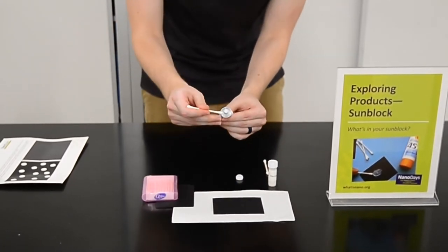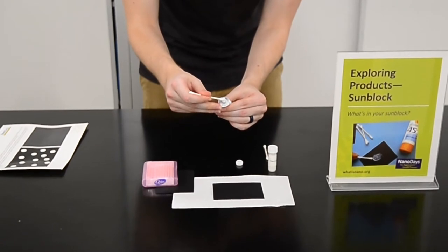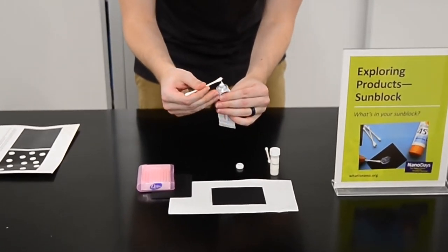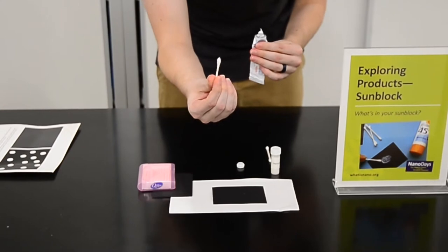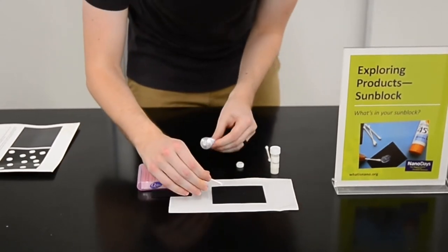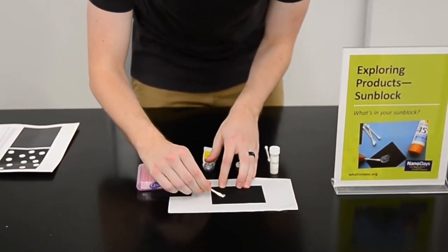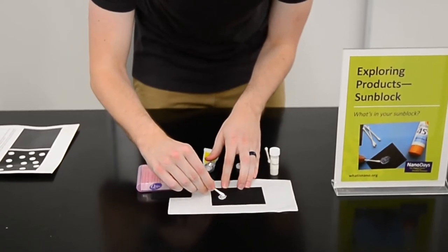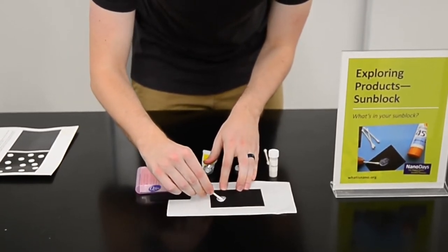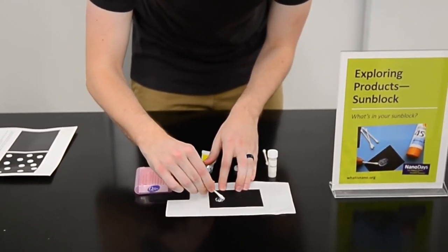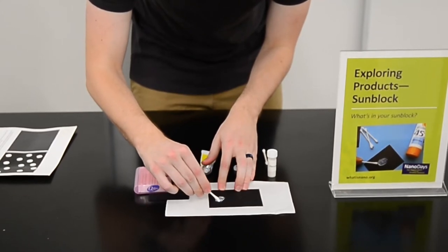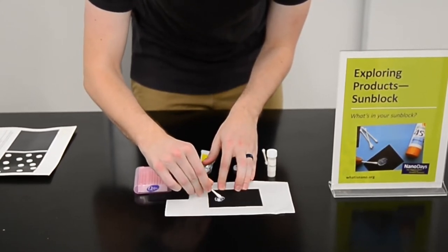So you'll see here, I've got a little dab on the q-tip, not too much. See, it's really white. And you'll notice here as I wipe it onto the construction paper, that I'm rubbing it in, I'm rubbing it in, I'm rubbing it in, and some of it's kind of absorbing, but you can still really see the white layer on top.